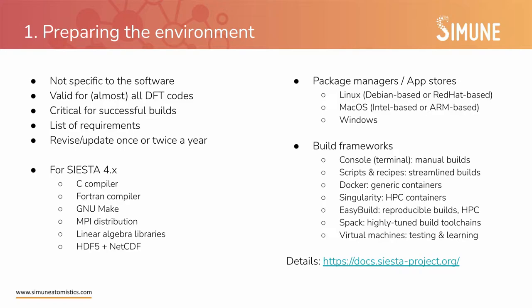You can also choose through different build frameworks: through the console for manual builds, which is what we will do now; from scripts and recipes, once you know how to do things, you can streamline your builds and have a repeatable way of doing them; Docker containers; Singularity containers; and frameworks like EasyBuild or Spack. You can also use virtual machines, mostly for testing and learning, just as you have in this school. Detailed instructions are available in the Siesta documentation.